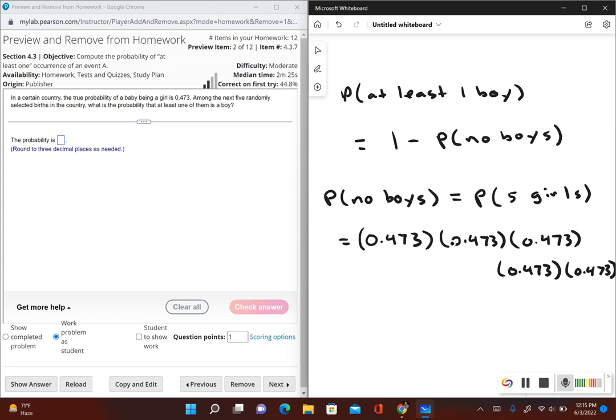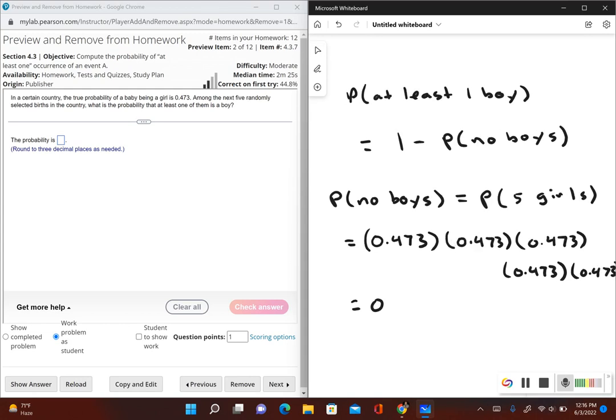Okay. So we're going to go ahead and multiply this all out. This is the probability that all five are girls. So I have 0.473. I'm just going to raise this to the fifth power. This gives me 0.0. It says to round to three decimal places. So I have 0.024. Now this is the probability that all five babies are girls.